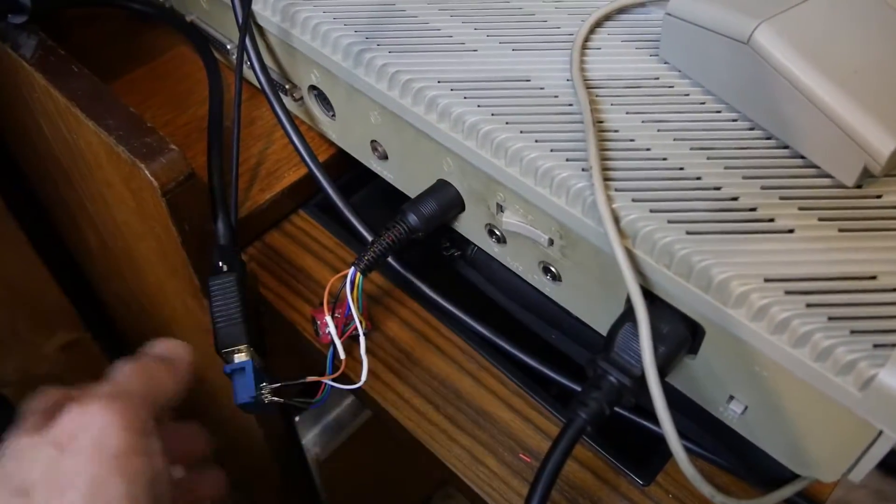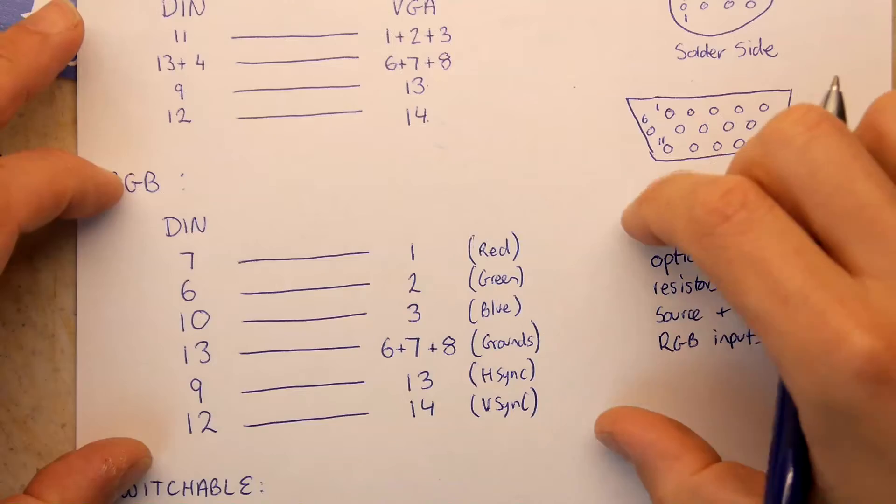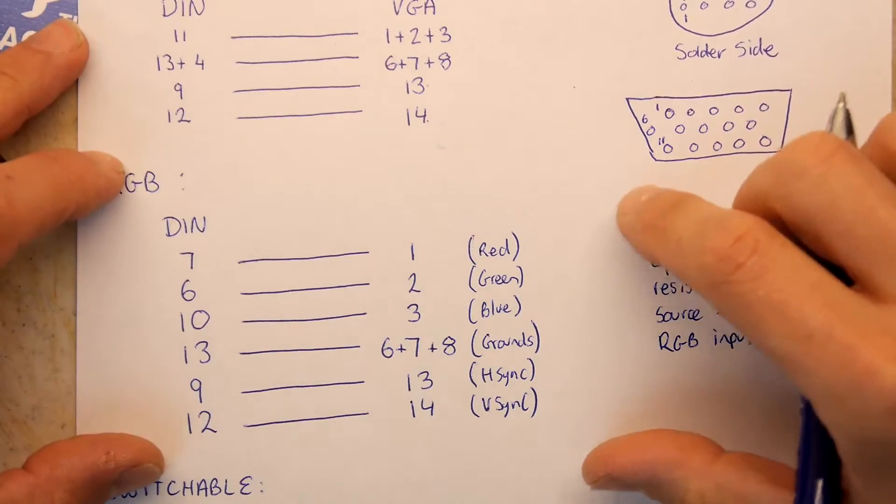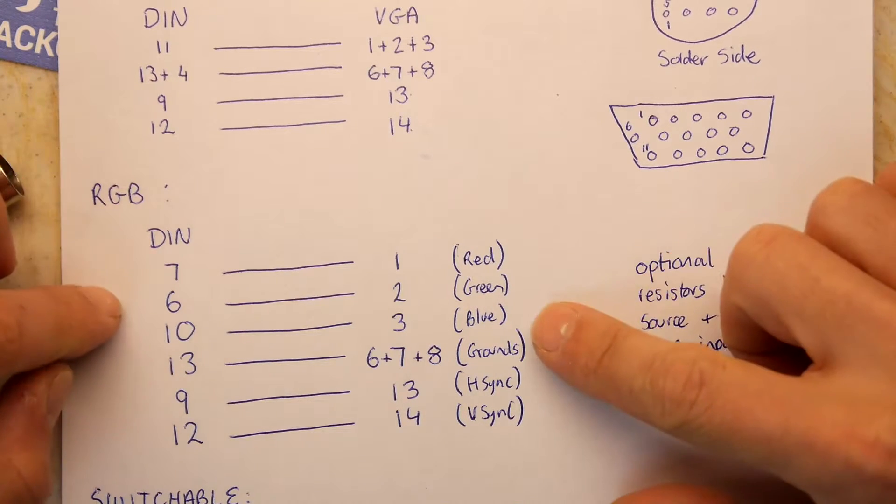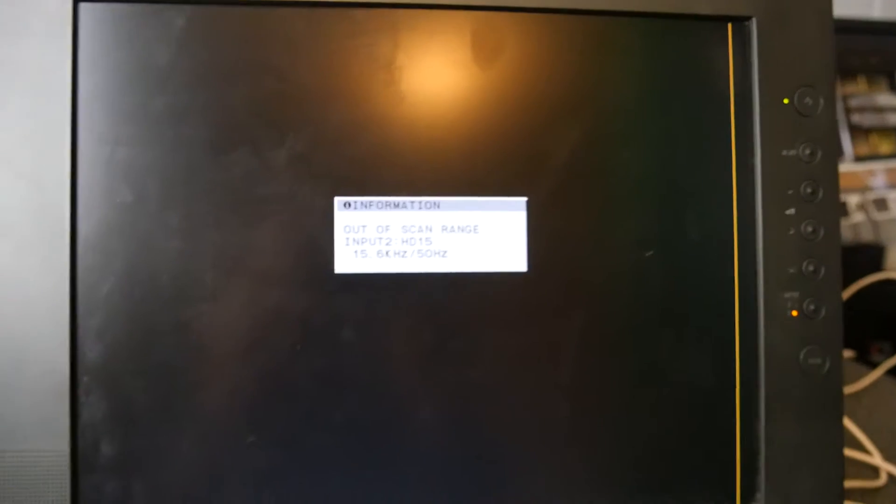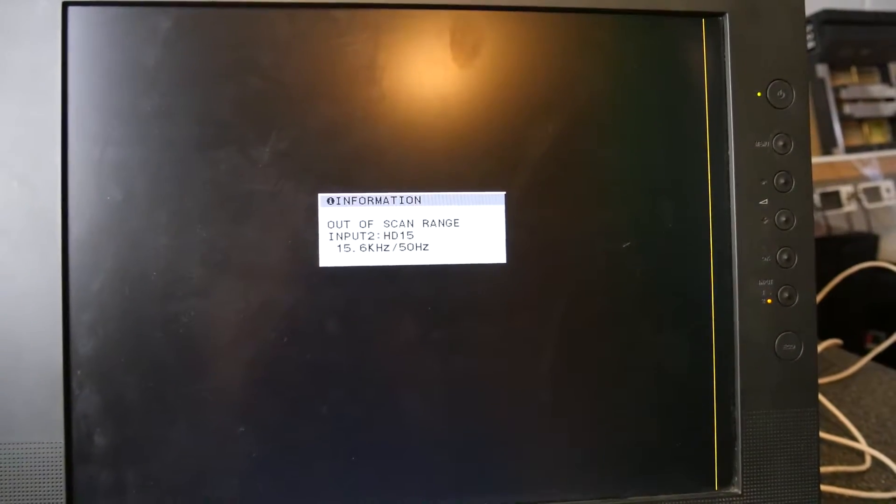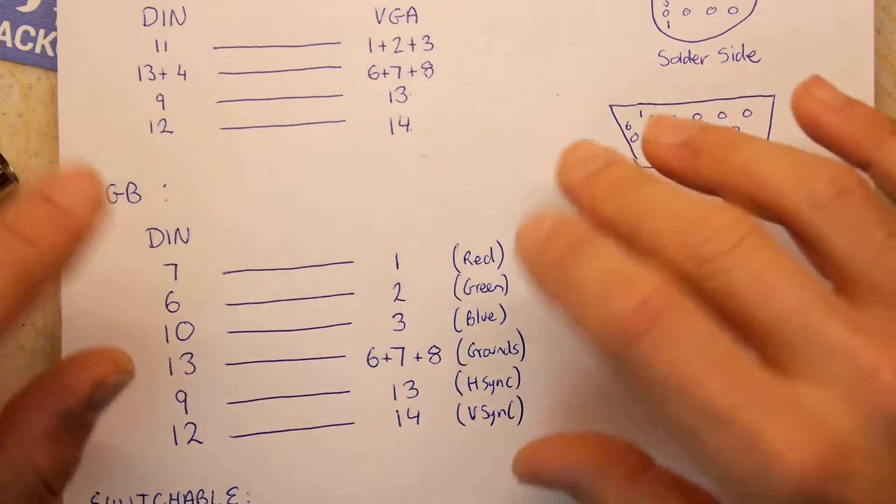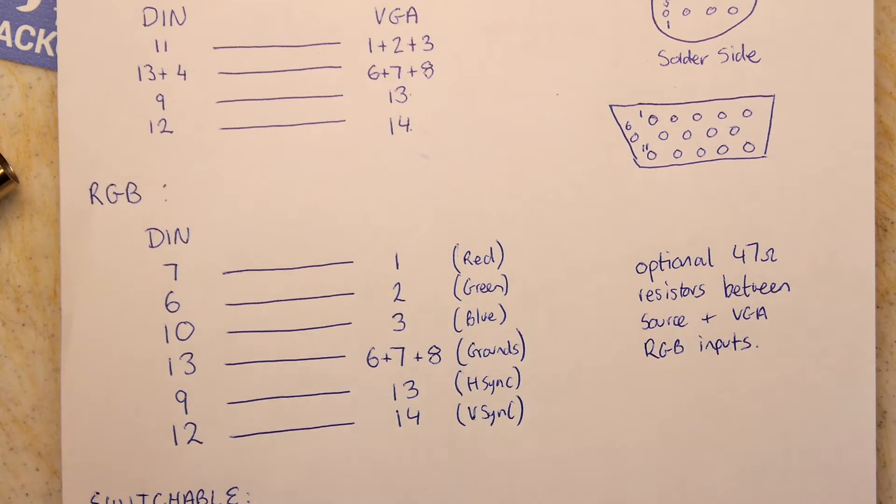Now that will only work if you've got a monitor that's capable of the fancy pants 15 kilohertz signal the Atari puts out. And that'll be like one of those multi-sync monitors. And if you're honest, there is a handful of modern monitors that will do that. None of them are ones that I own, unfortunately. So that's a bit pants. However, I'll have another video on how I kind of got around that in the next video.